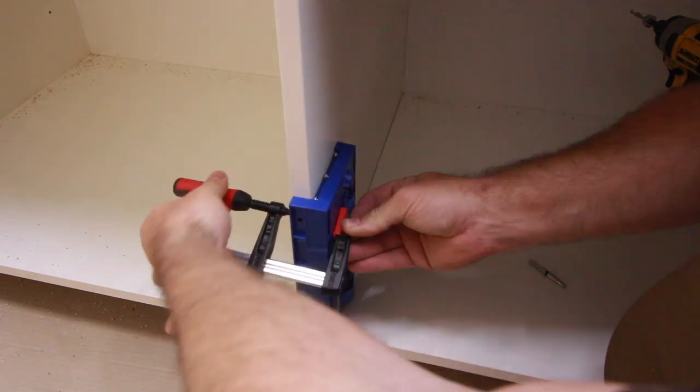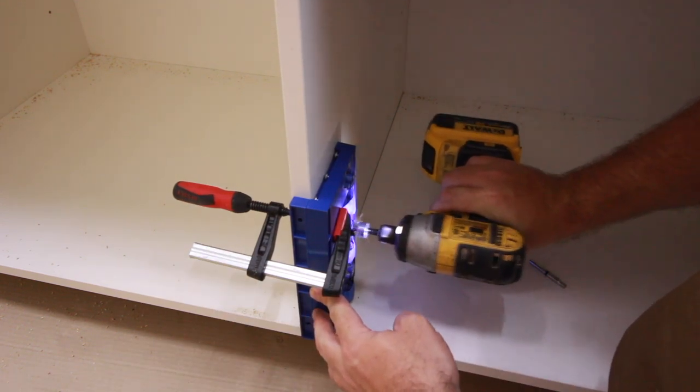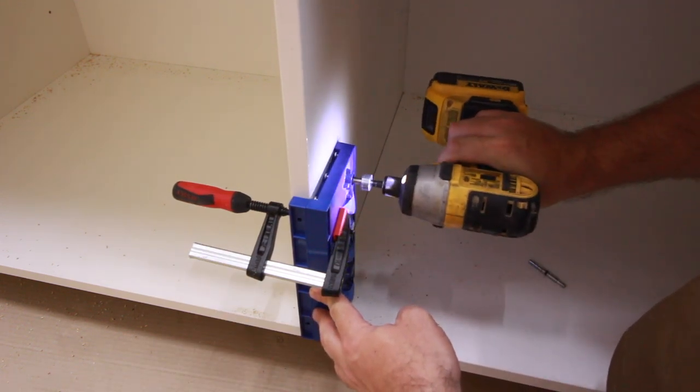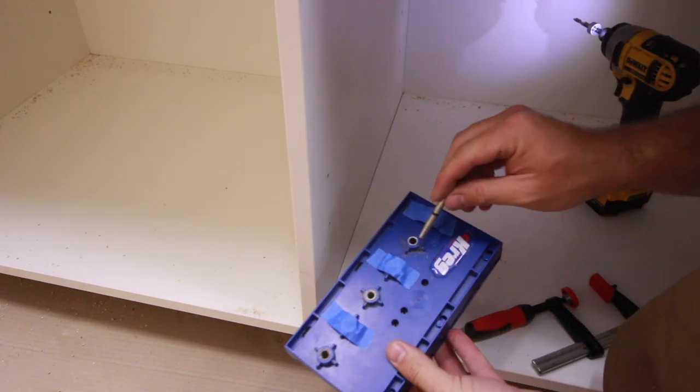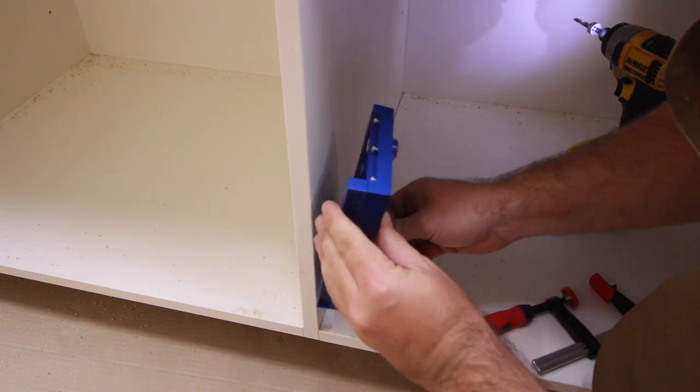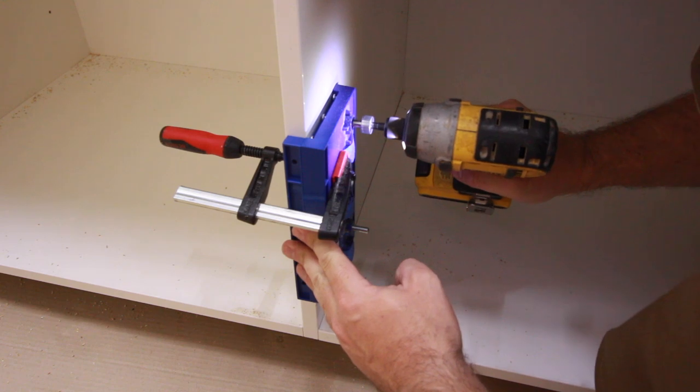Then I drilled for the shelf pins. You can see I used blue tape on the holes so I don't get confused and drill the wrong ones. When I switch around the jig, I had to remove the tape and put it on the other holes so they match on the opposite sides, otherwise they would come crooked.